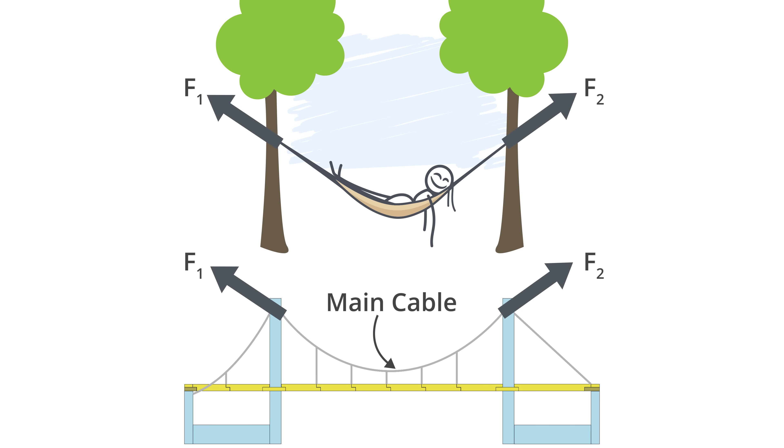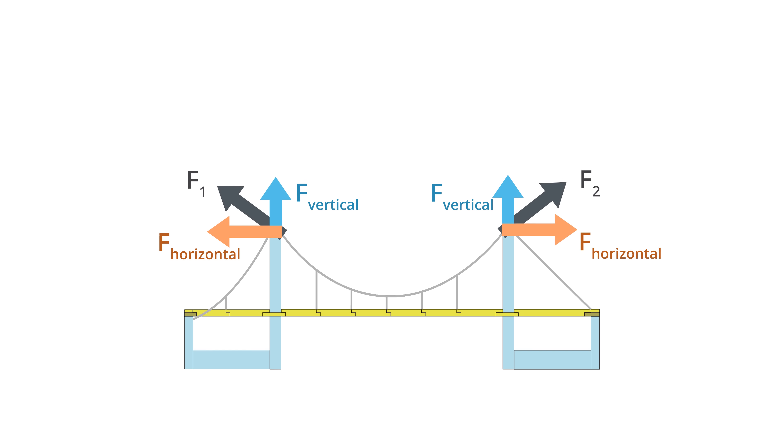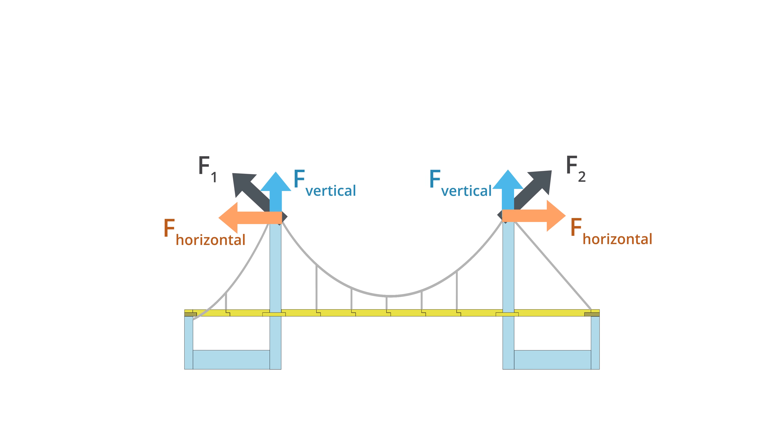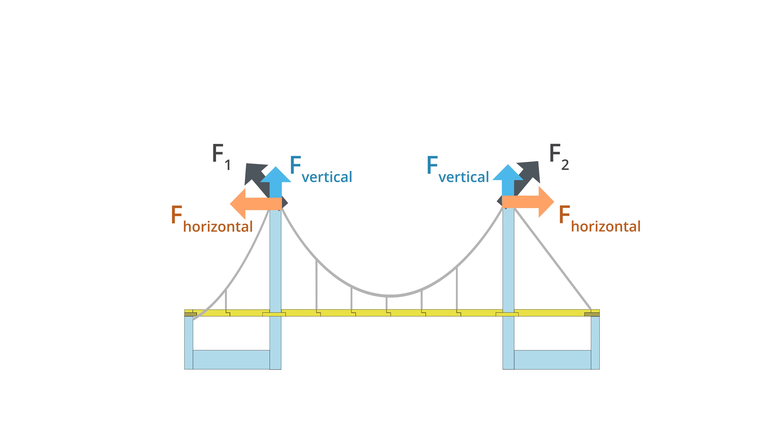The main cables of a suspension bridge carry their load the same way as a hammock does. The forces in the bridge cables can be broken into vertical and horizontal components, just like the hammock forces. And if the bridge cables have a steeper slope at their ends, the cable tensions will be reduced, allowing a less expensive cable to be used.